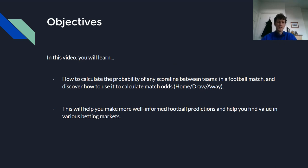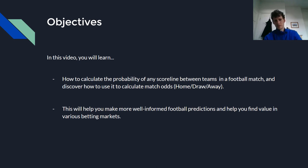So what are the objectives? In this video you will learn how to calculate the probability of any scoreline between teams in a football match, and discover how to use it to calculate match odds — home, draw and away. We're talking about English football, so soccer if you're American. This will help you make more well-informed football predictions and help you find value in various betting markets.